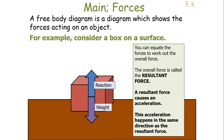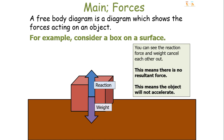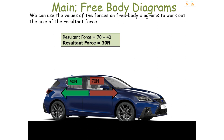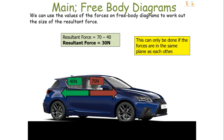This acceleration happens in the same direction as the resultant force. If there is no resultant force — as in this example where reaction force and weight cancel each other out — there will be no acceleration. If we add values to the free body diagram, we can work out the size of the resultant force. In this example, we have 70 newtons acting forwards and 40 newtons acting backwards, so the resultant force is 30 newtons forwards.